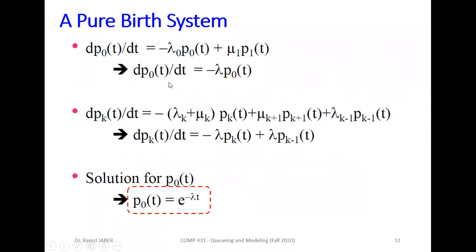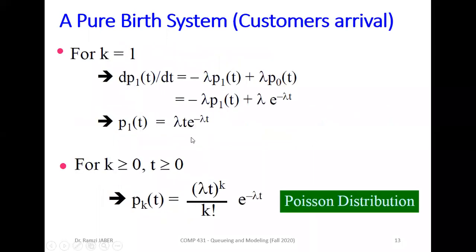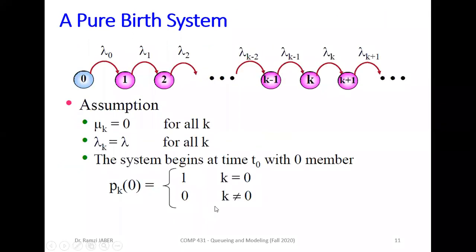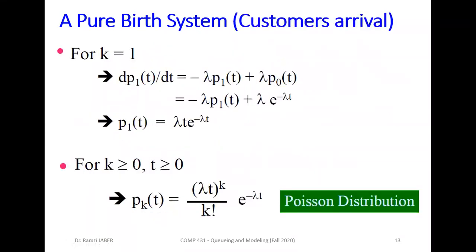From some mathematical equation, we get P_0(t) equals e^(-lambda*t). At k equal to 1, we get this. For k positive, we get the equation of Poisson distribution: (lambda*t)^k * e^(-lambda*t) / k!. So as you can see, if we have pure birth system, only customers in, this distribution, another method to prove it is Poisson distribution. So it's another proof that the customers arrival is in Poisson distribution.